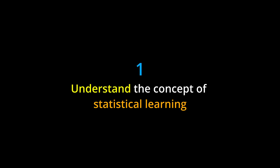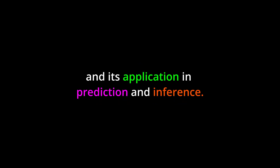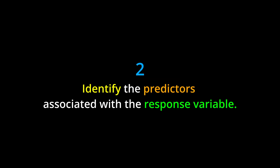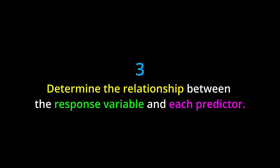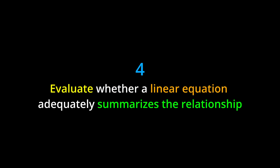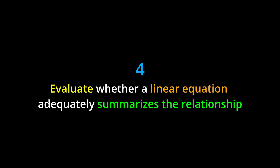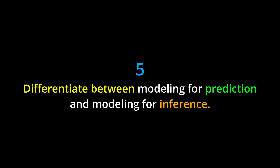Learning objectives: by the end of this chapter you should be able to: 1. Understand the concept of statistical learning and its application in prediction and inference. 2. Identify the predictors associated with the response variable. 3. Determine the relationship between the response variable and each predictor. 4. Evaluate whether a linear equation adequately summarizes the relationship between the response variable and each predictor.